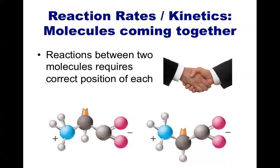To really understand the mechanism and the timing of how molecules react, it would be great if we could shrink ourselves down to the size of the molecules. Since we can't do that, we'll have to imagine the molecules as our size or as the size of two people. Molecules in a solution or in our cells are always in motion, bumping into each other randomly.